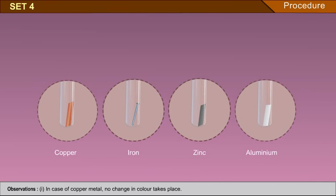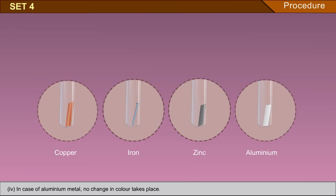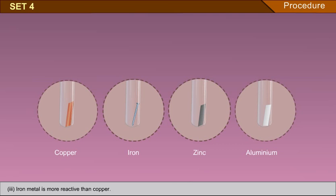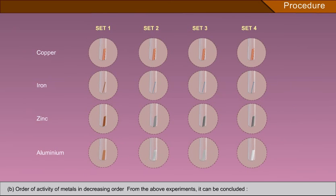Observations: In case of copper metal, no change in colour takes place. In case of iron metal, no change in colour takes place. In case of zinc metal, no change in colour takes place. In case of aluminium metal, no change in colour takes place. Conclusions: Aluminium is the most reactive and does not react with its own salt (aluminium sulphate). Zinc is more reactive than iron and copper. Iron is more reactive than copper. Copper is the least reactive.